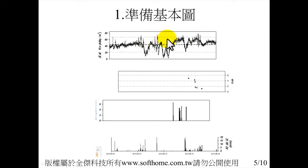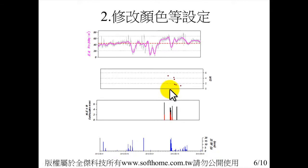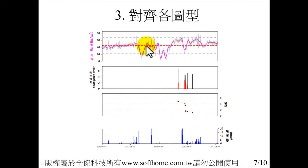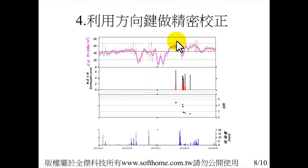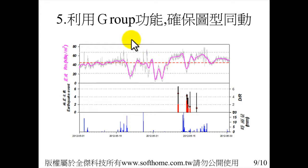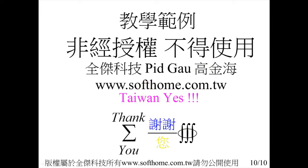First, we have to prepare each plot. In this example, there are four plots. When you prepare these plots, you have to modify them each perfectly. Then we can arrange these plots. We use the arrow key to move the plots to our desired position. We also can use the group function to guarantee many plots move together. Now we begin to show how to do it.